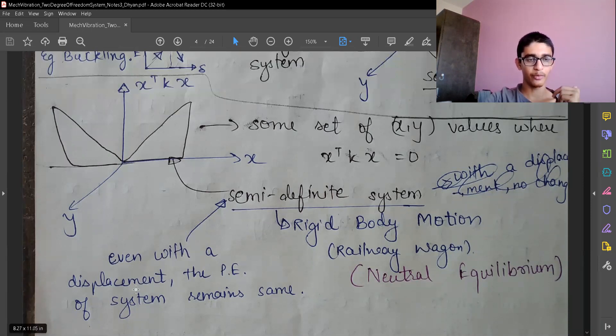Even with displacement, even if I provide some disturbance to the system, wherever the system lands, the potential energy will remain the same as before the disturbance. So the potential energy remains same.